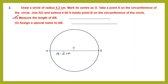First question: measure the length of AB. Take your ruler, place it on line AB, and measure. You will see it equals 8.4 centimeters, because the radius is 4.2 and there are two radii — 4.2 plus 4.2 gives 8.4. Now assign a special name to AB: it is a straight line passing through the center touching two points on the circumference, so it is called a diameter.